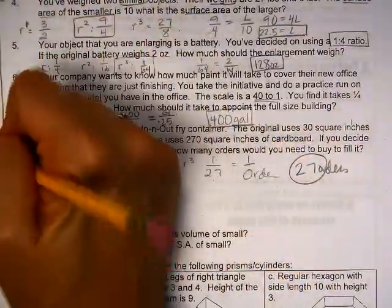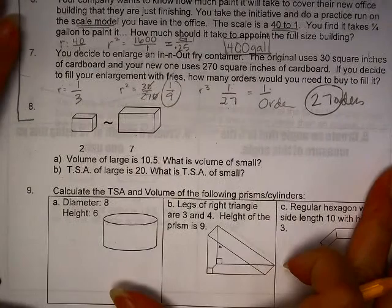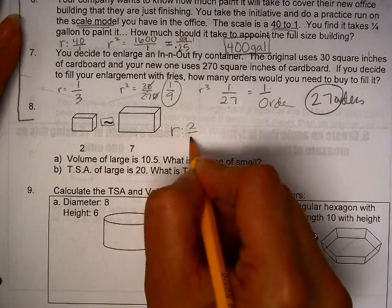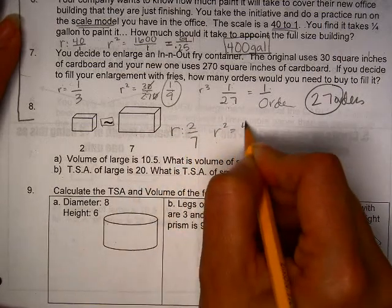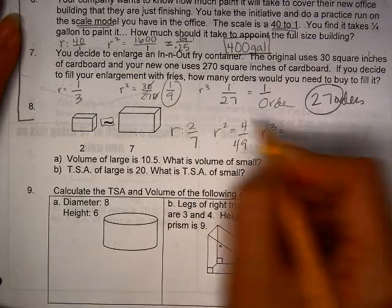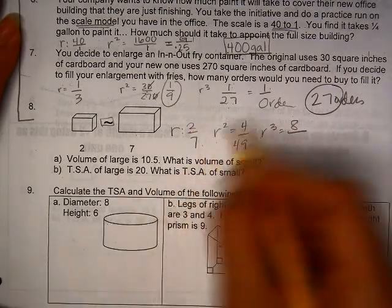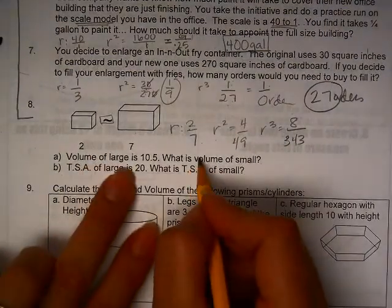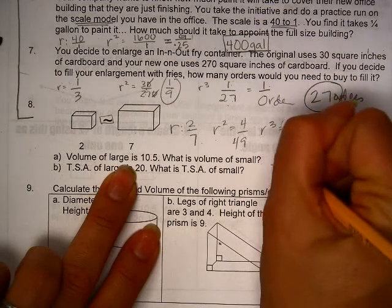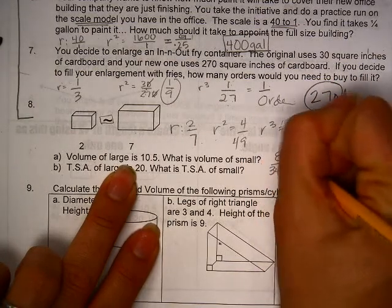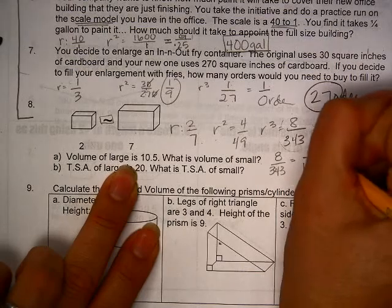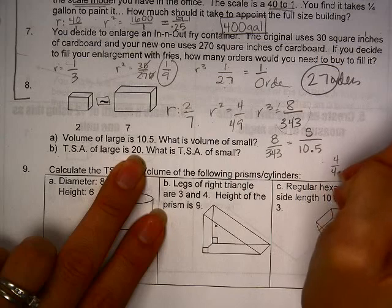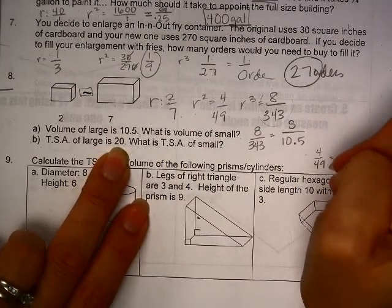All right, let's go ahead and do 8 as well, so we can get all of these in one fell swoop. So this little symbol means similar. This means that R is 2 to 7, so R squared is 4 to 49, and R cubed is 2 cubed and 7 cubed. So those are all of my ratios, and I am, first of all, looking for volume, which means I use this. So 8 is to 343 as the volume of the large is to the volume of the small.